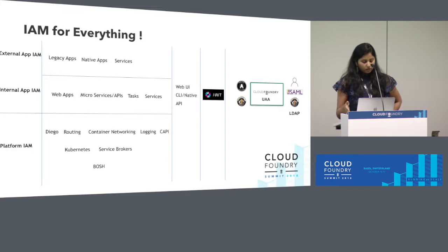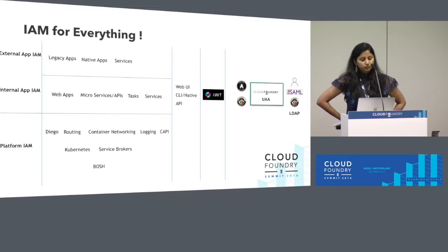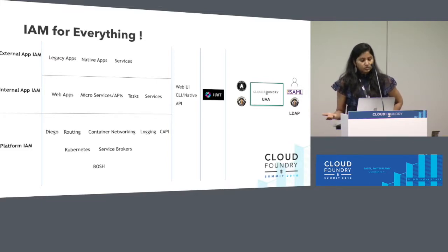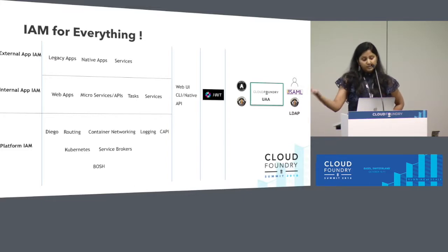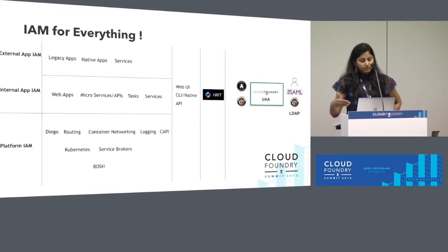UAA also helps Concourse and CredHub with authentication and authorization. On the application front, since UAA is a token server, it can be used to secure applications. There are different kinds of applications and workloads that could be running on the platform — web applications, microservices, functions, and plain old services — and they could also be using UAA for their identity integration.